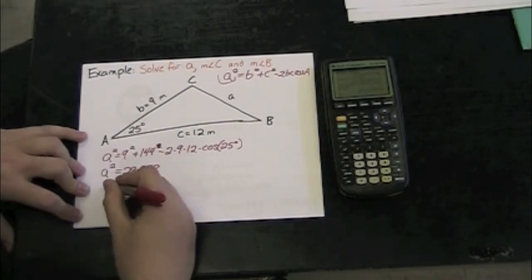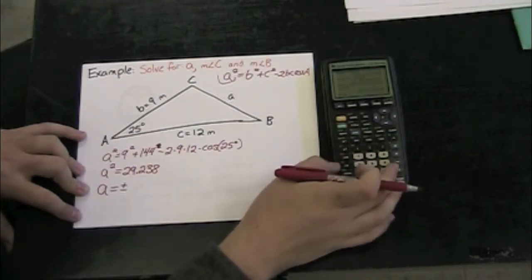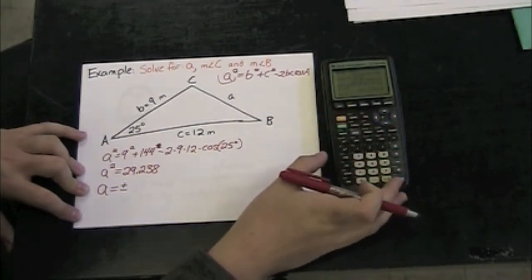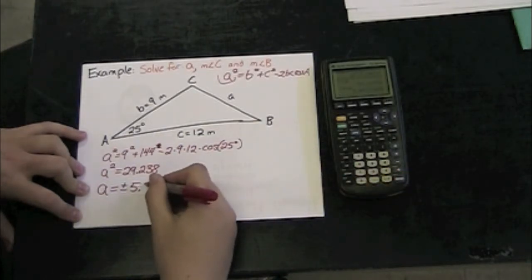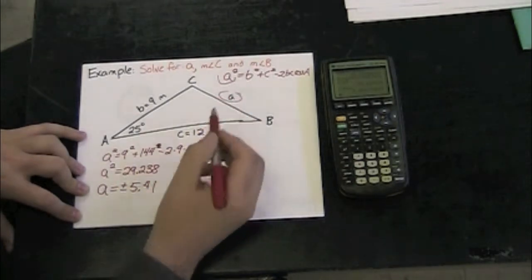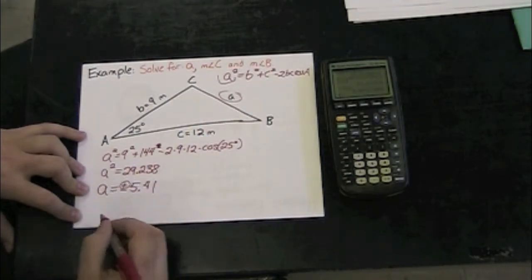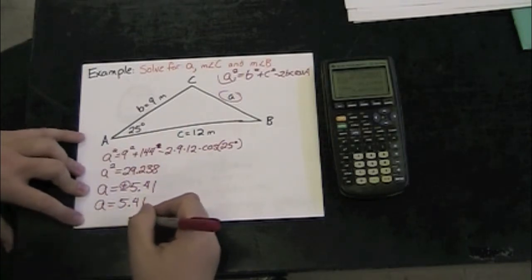If I take the square root of both sides, A = ±5.41. Since we're talking about a length, I'm only going to use the positive square root. The size of side A is 5.41 meters.